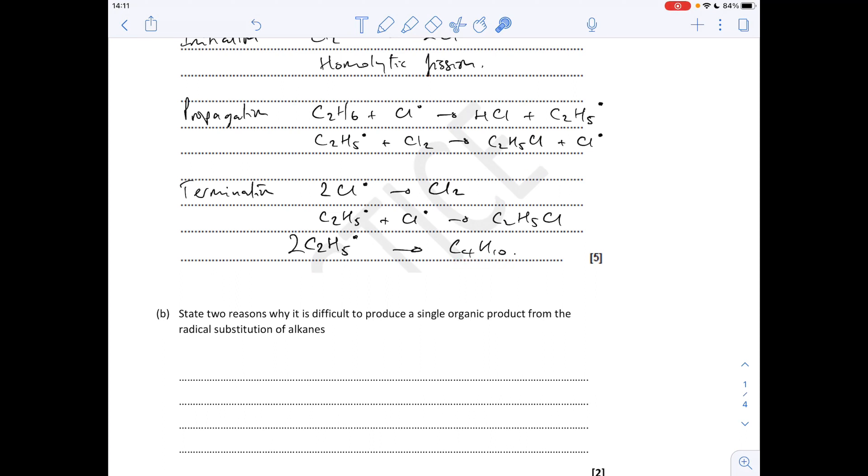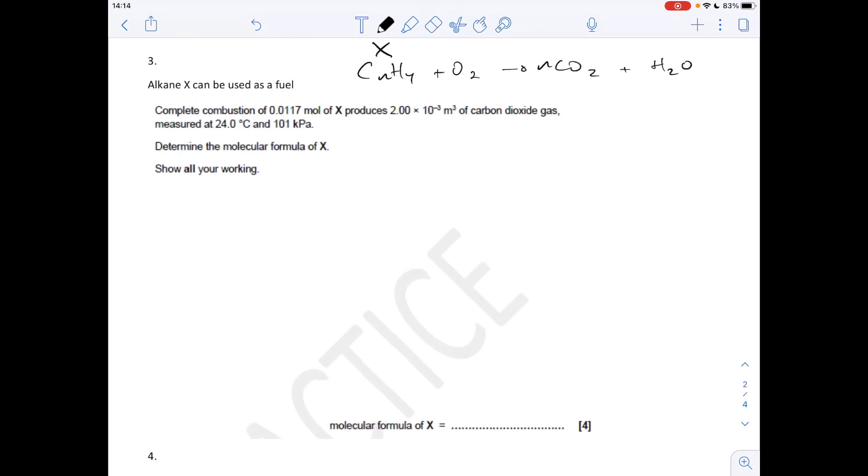Question three is based on an alkane X used as a fuel. Obviously when it completely combusts it's going to make carbon dioxide and water. What we need to do here is work out how many moles of carbon dioxide have been produced, and then that will tell us how many moles of carbon are in the hydrocarbon fuel.